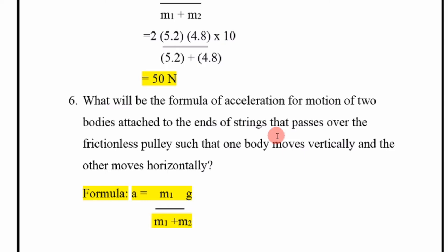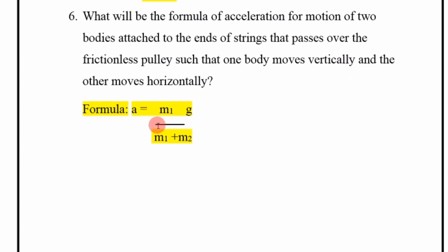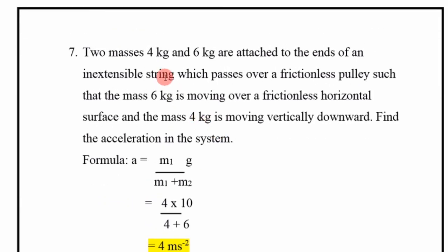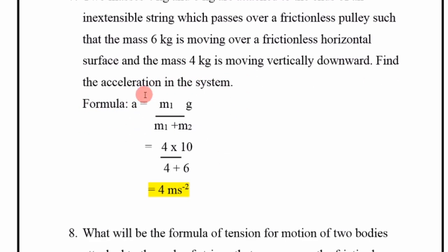What will be the formula of acceleration for motion of two bodies where one moves horizontally and the other vertically over a frictionless pulley? a = m1/(m1 + m2) × g. Numerical: Two masses 4 kg and 6 kg — mass 6 kg moves over a frictionless horizontal surface and mass 4 kg moves vertically downward. Putting the values, a = 4 m/s².